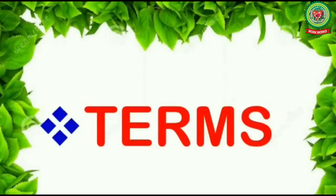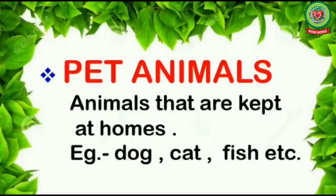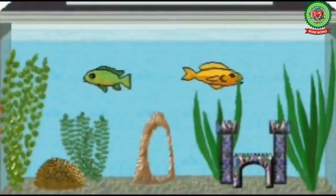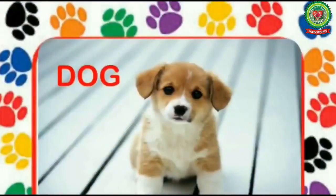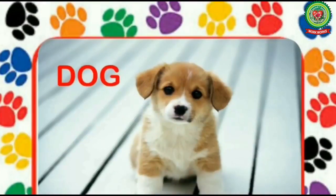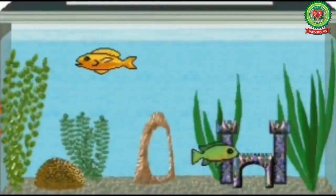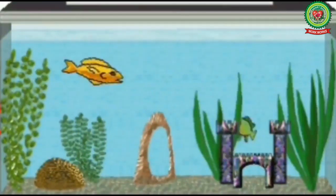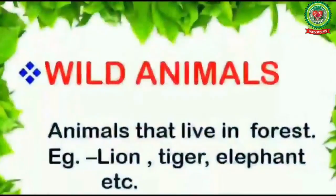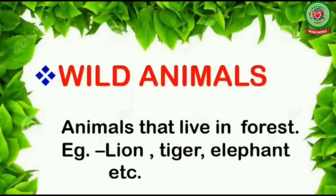Our first term is pet animals — animals that are kept at homes. Examples: dog, cat, fish, etc. Dog is a faithful animal; it guards our house, so people like to keep a dog as a pet. Similarly, fish and cat are also examples of pet animals. You can keep fish in an aquarium if you want to keep it as a pet.